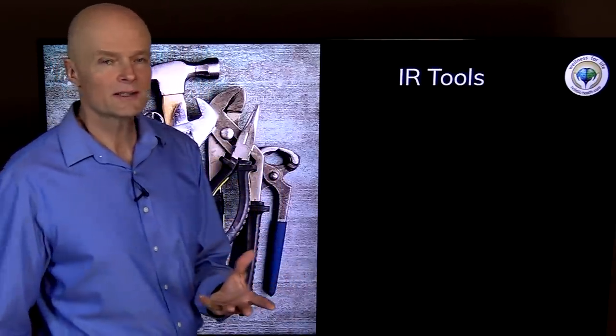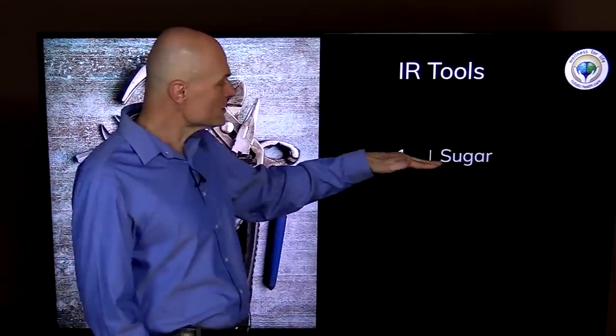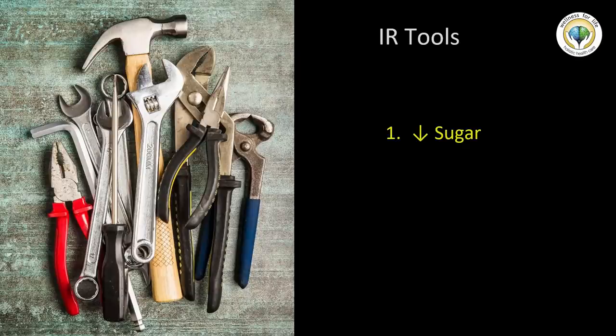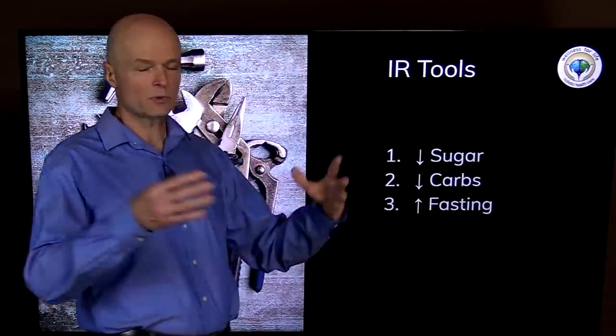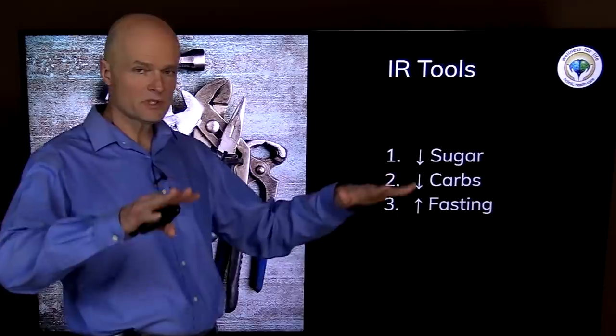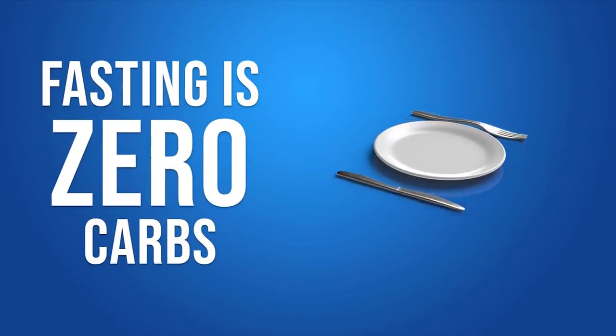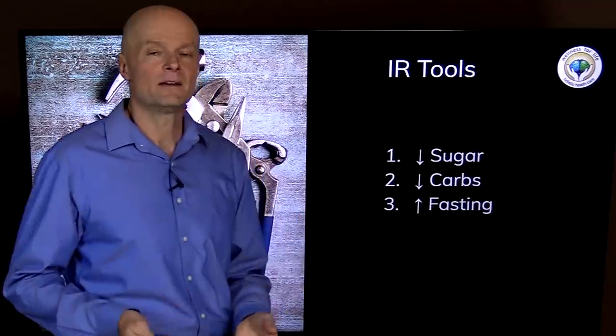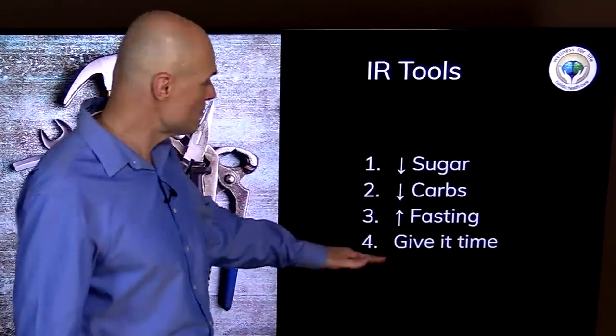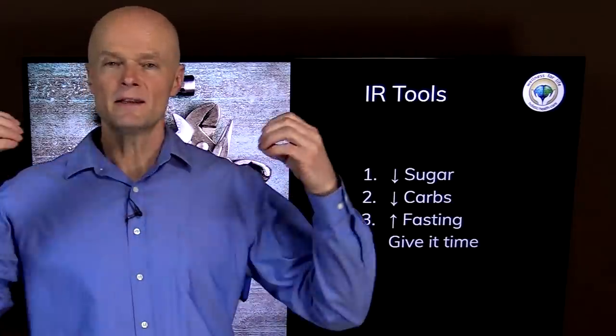If you need some additional leverage against insulin resistance, you have some insulin resistance tools, just like a carpenter has his tools. The first one would be to reduce sugar. The second would be to reduce carbohydrates because both of those promote insulin resistance, so you reduce them. The third thing is to increase fasting, to prolong your fasting period, because if lowering carbs reduces insulin and that's a good thing, then fasting is better because fasting is zero carbs, none at all. Even protein and fat trigger a little tiny bit of insulin, but when you're fasting you're getting none of that. The fourth thing you want to keep in mind is be patient, give it some time.